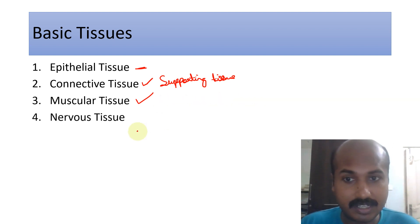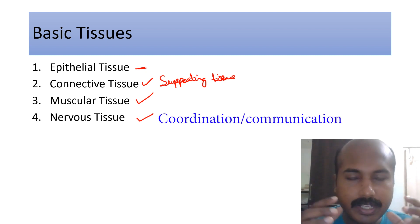And the next is called nervous tissue. Nervous tissue has the quality of integrating, of getting stimuli or forming electrical stimuli or chemical and electrical stimuli, integrating it and conveying it. So it is basically involved in coordination of signals and coordination of activity.